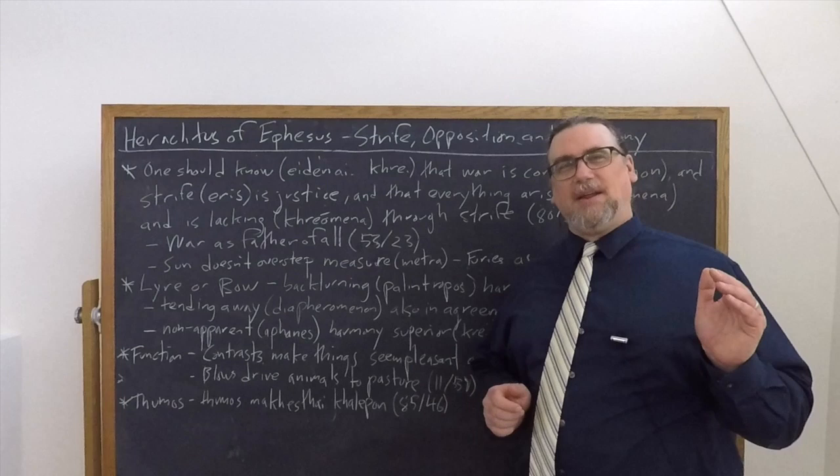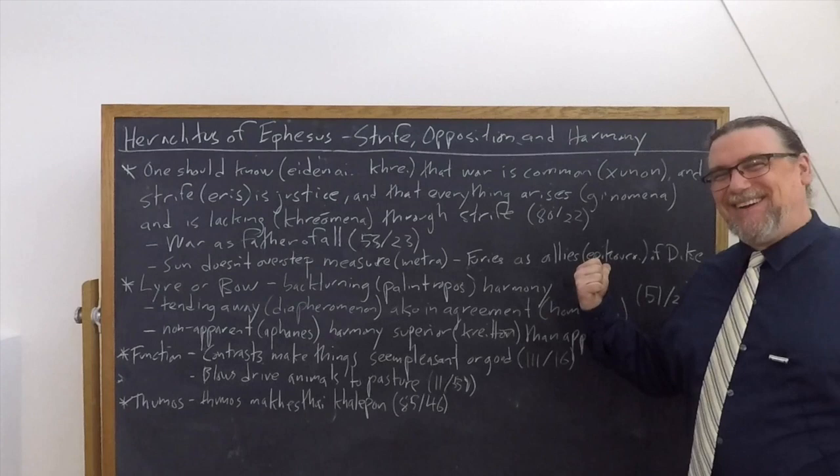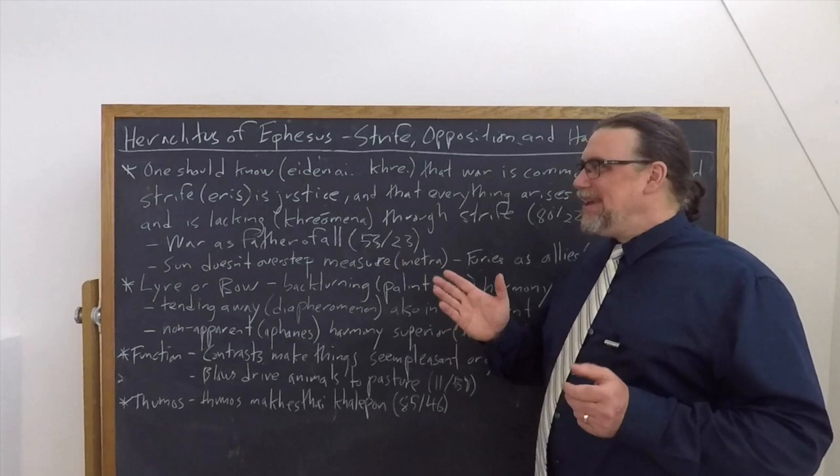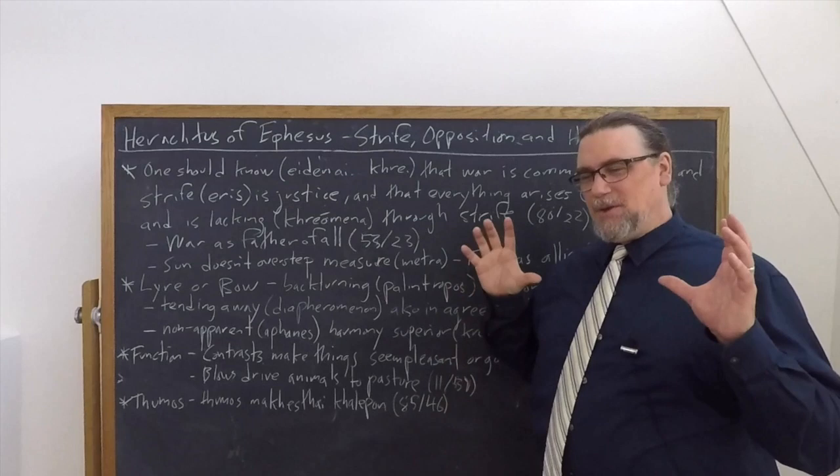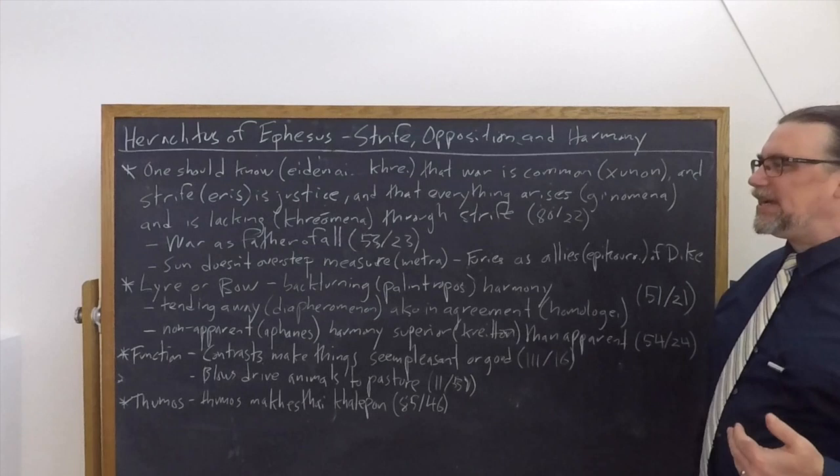So justice, if the sun gets out of line, if the sun does more than it ought to, like goes too close to the earth or decides it wants to sleep in one day or something like that, then the furies are going to get after it. And the furies are, you might say, they're very much in alignment with Eris, with strife. They are the ones who come in and stir stuff up and impose, inflict upon others. So I think that's enough about that sort of cosmic process and principle.